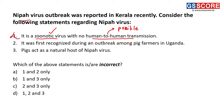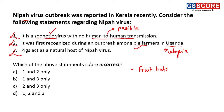Second statement: Nipah virus was first recognized during an outbreak among pig farmers in Uganda. This is also incorrect — Nipah's first outbreak was seen among pig farmers of Malaysia, not Uganda. Third statement: pigs act as the natural host of Nipah virus. This is also incorrect, because the natural host of Nipah virus is fruit bats belonging to the Pteropodidae family, not pigs.